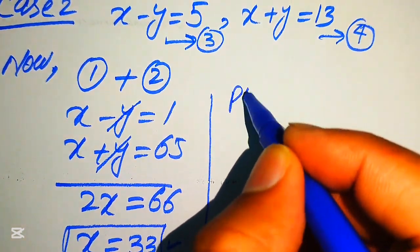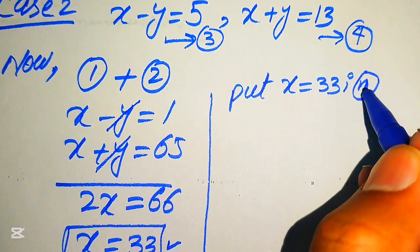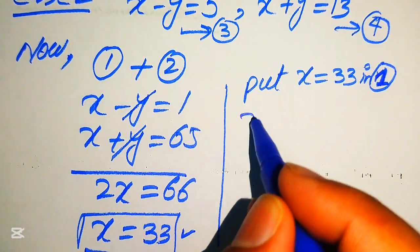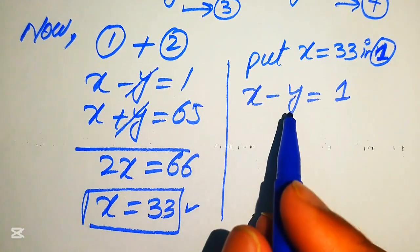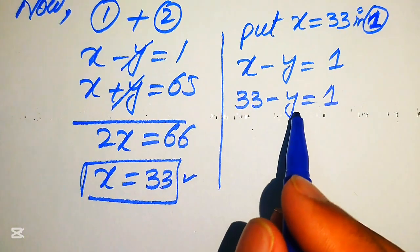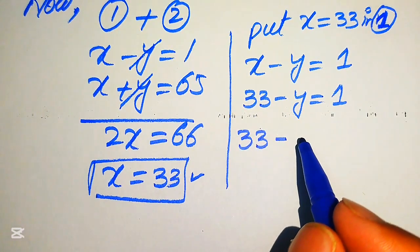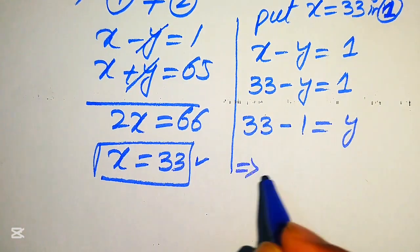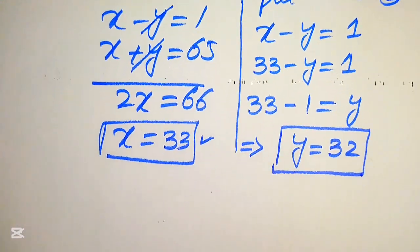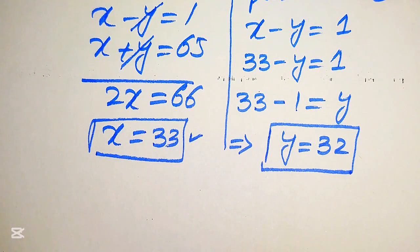We substitute x equals 33 into equation 1: 33 minus y equals 1, which gives us 33 minus 1 equals y, so y equals 32. This is our first solution set, and both values of x and y are integers.